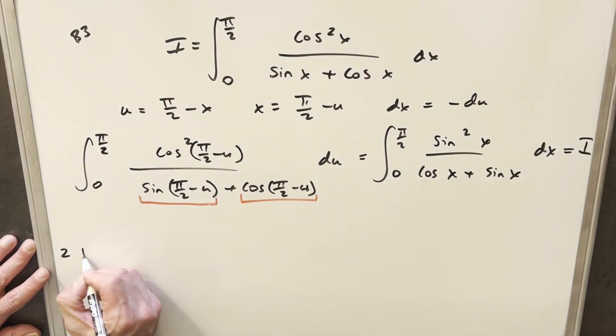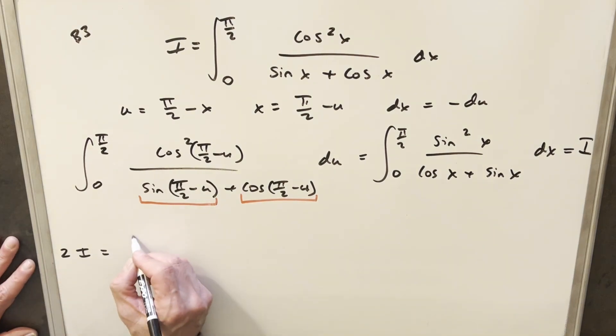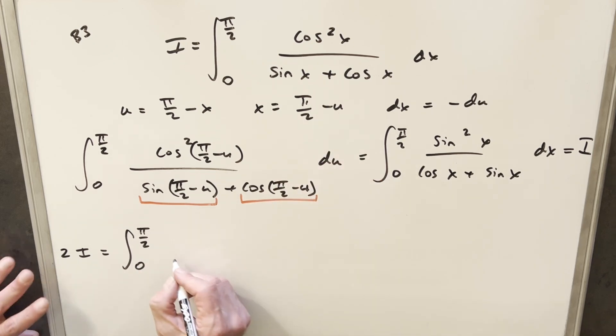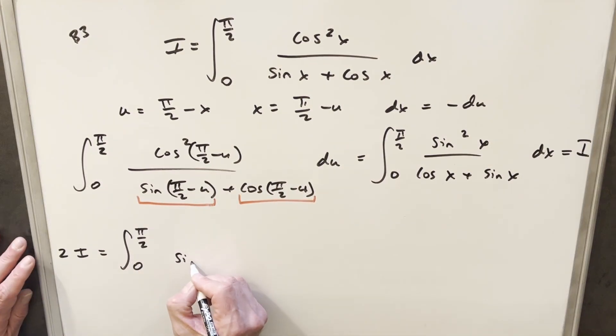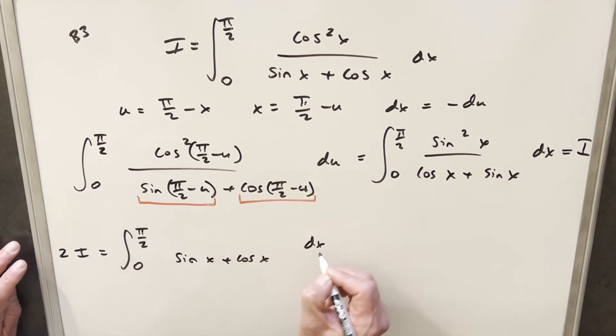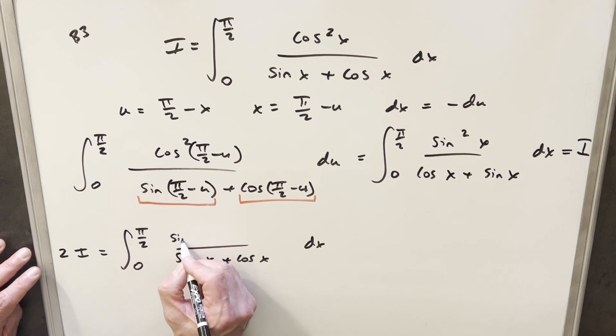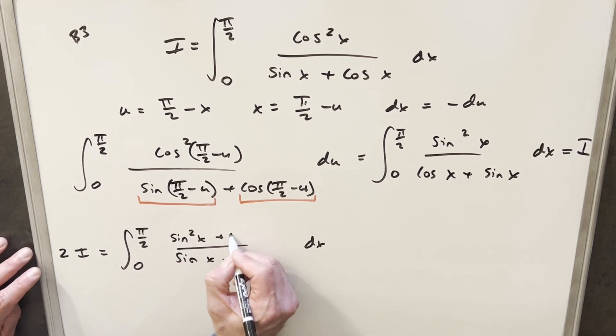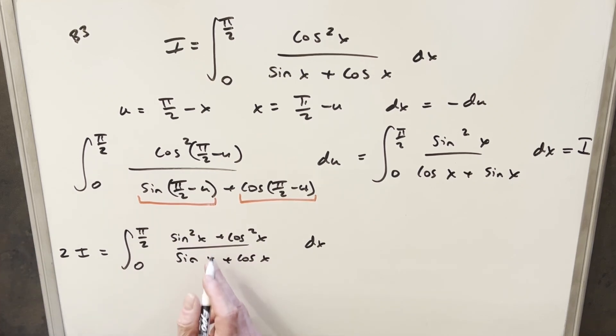So doing that, this is going to give me, we're going to have two copies or two I. Same bounds. We have the same denominator, different order, but the denominator is just going to be sine x plus cosine x. And then adding together our numerators, we have sine squared x plus cosine squared x. But what's that? That identity is just one. But now at this point, it's starting to look more manageable.